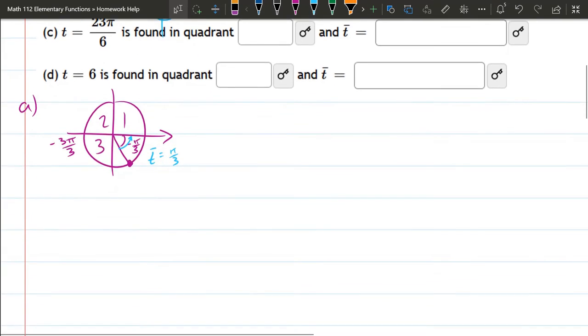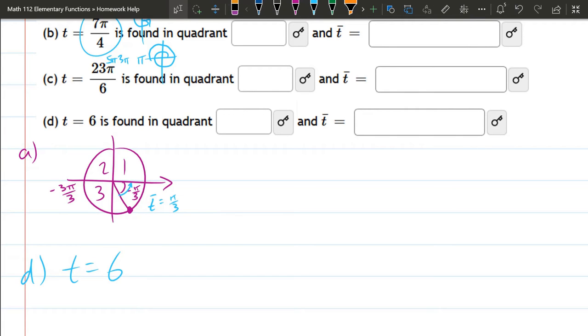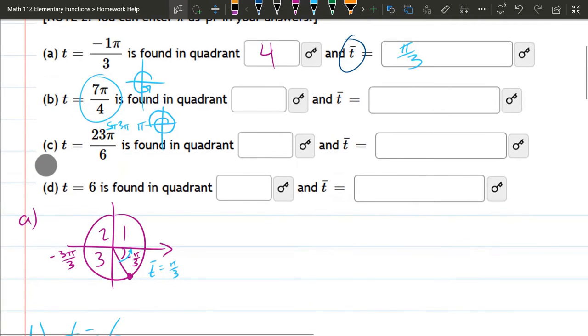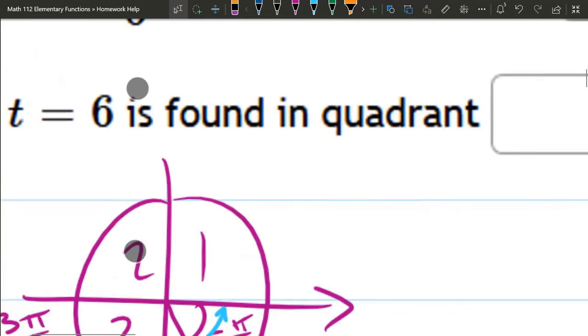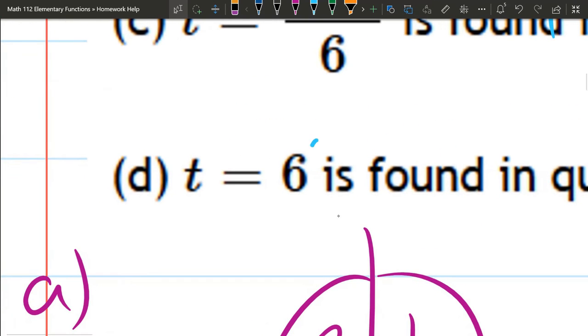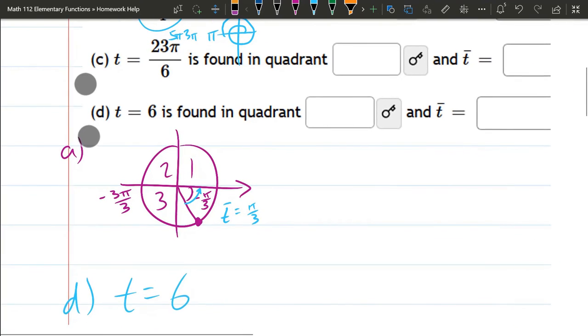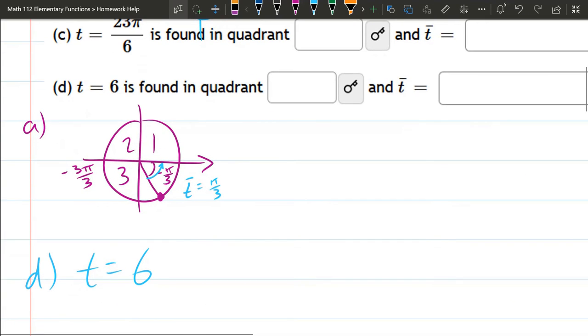What we're going to do is look at the last one. Part D, t equals 6. What? All the rest of these were usually going to be in radians unless you see the degree symbol. Again, if it was degrees, you would see the degree symbol. However, there's no degree symbol and also the other parts are in radians. So that's a really good indication this is a radian measure. However, we're always used to a multiple of π and there's no π here. So what are we going to do now?